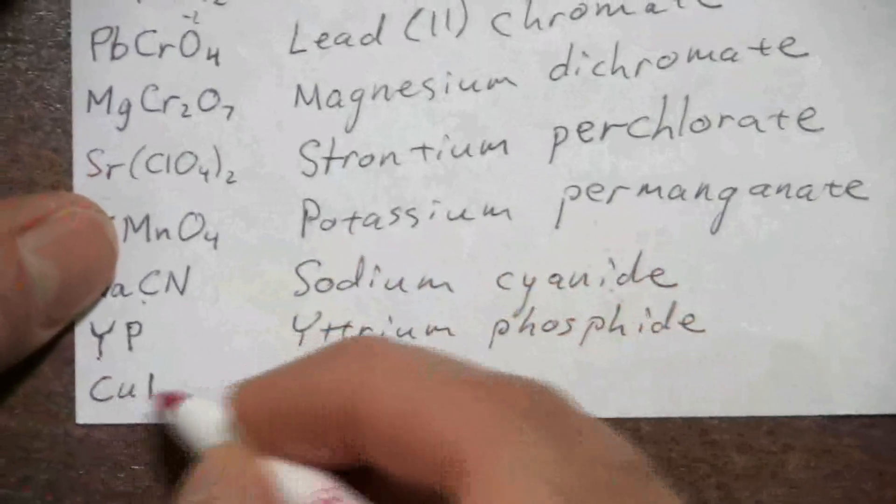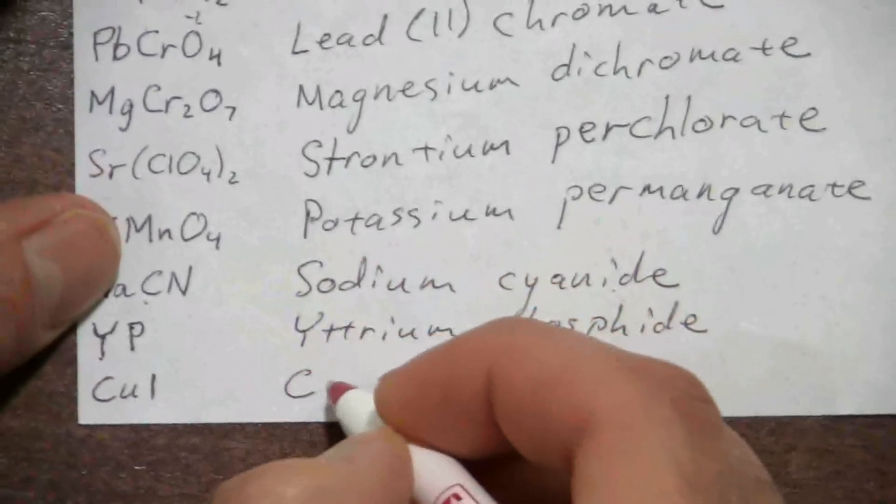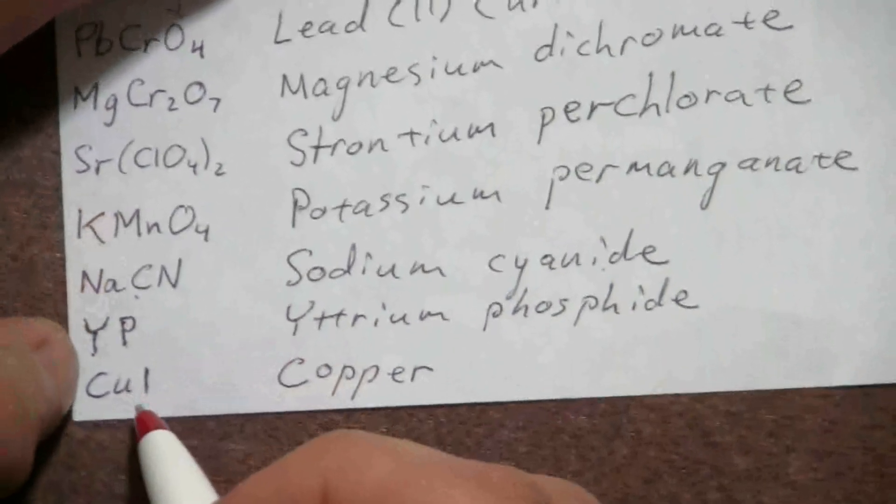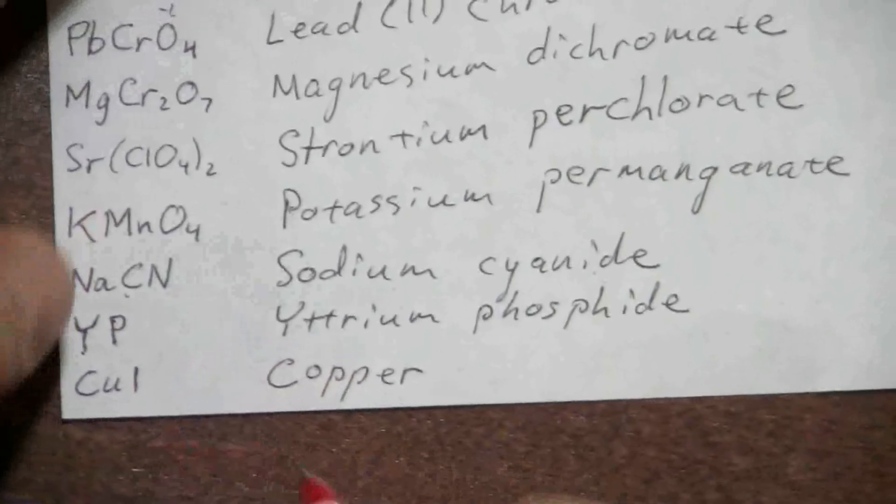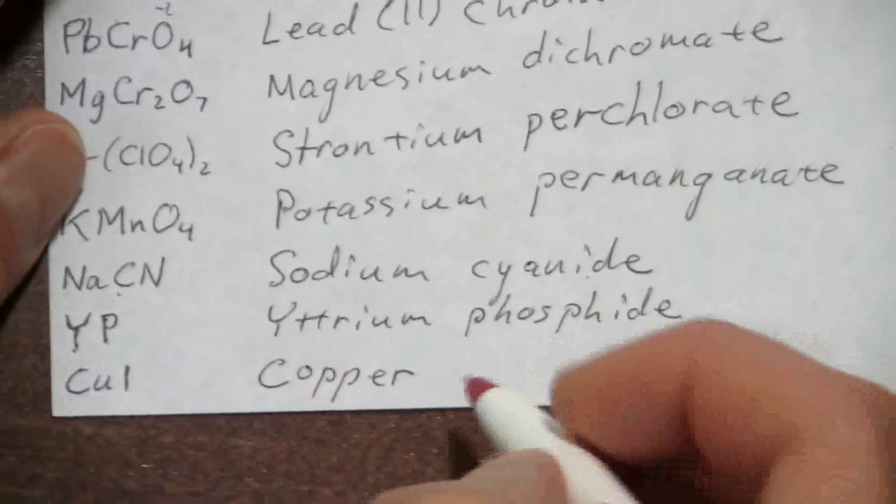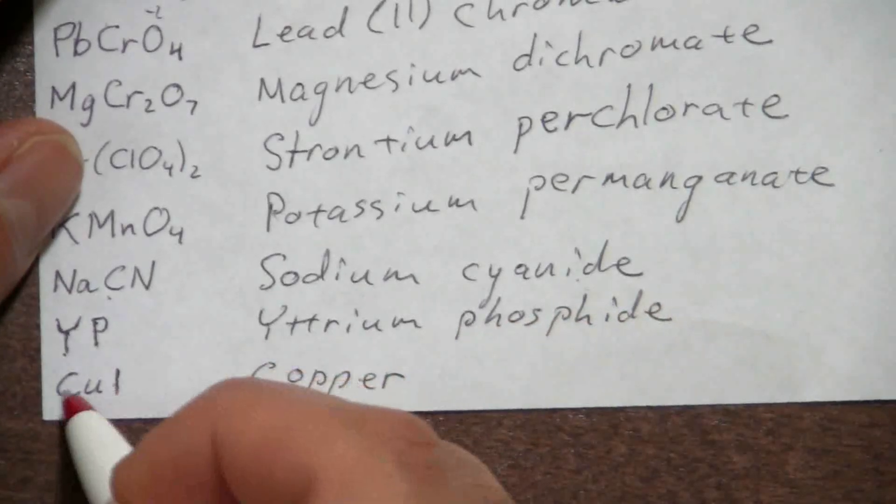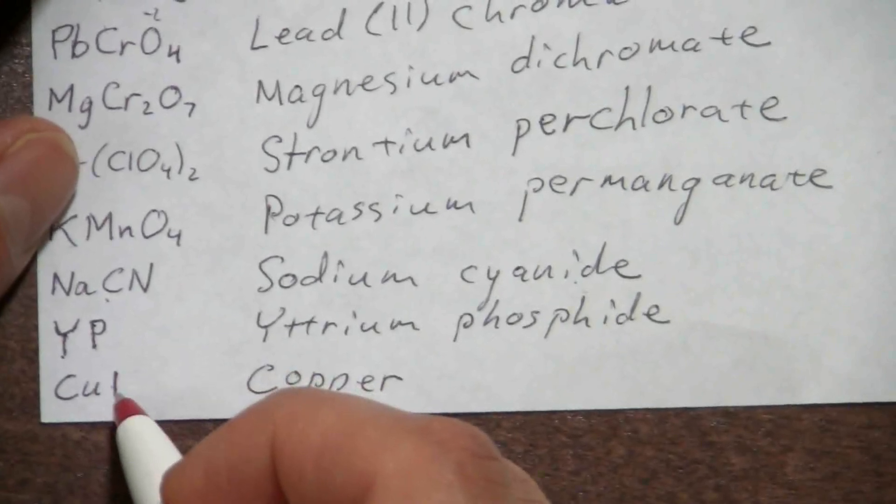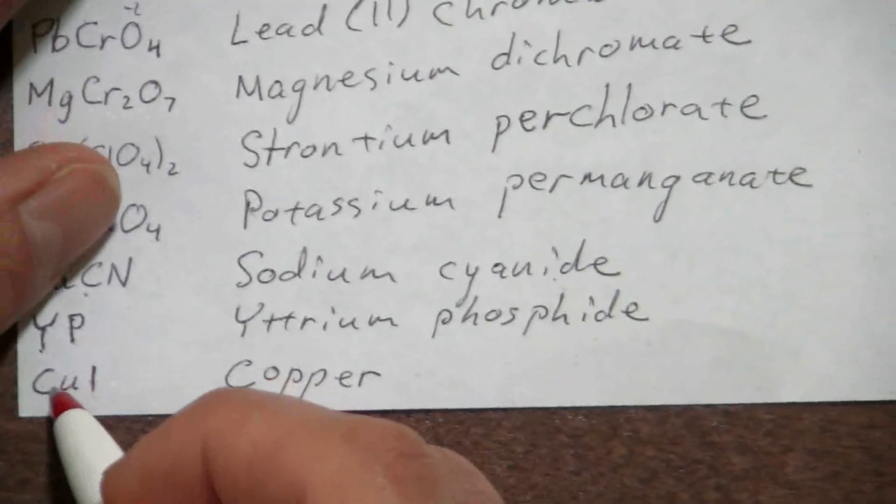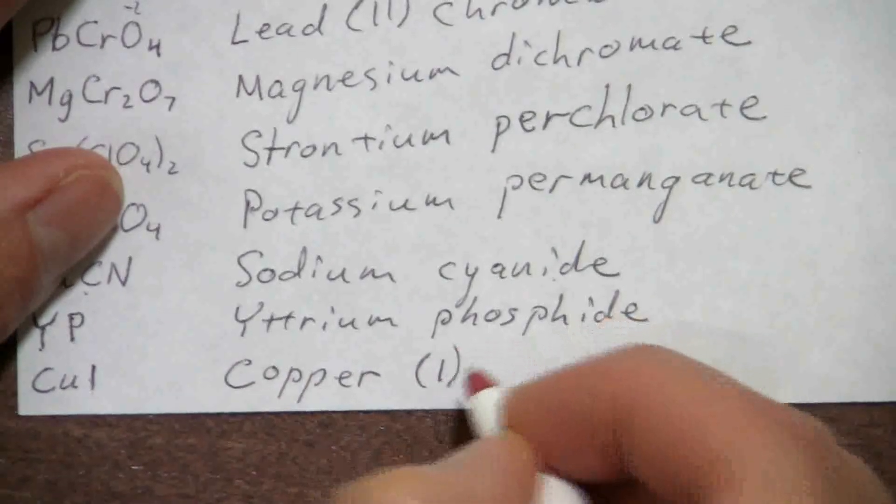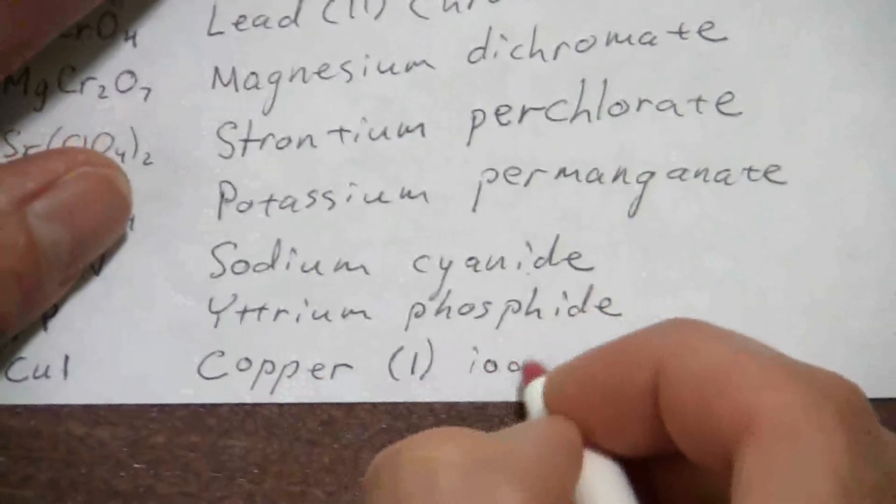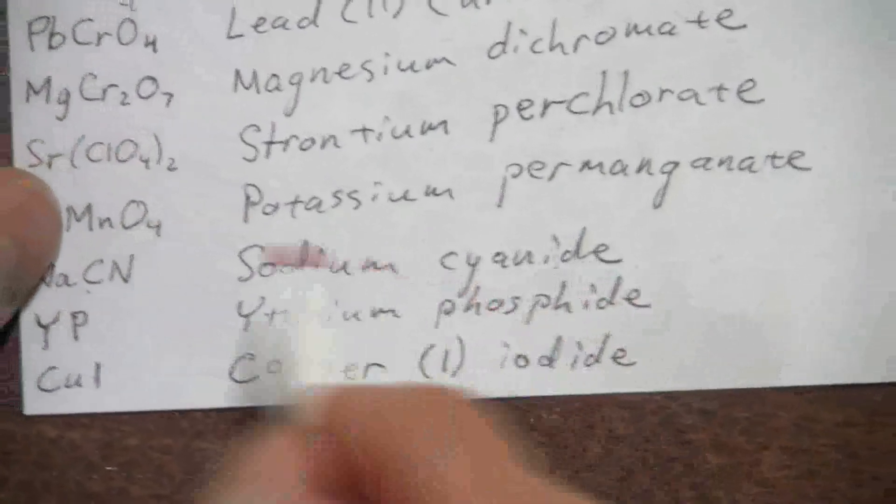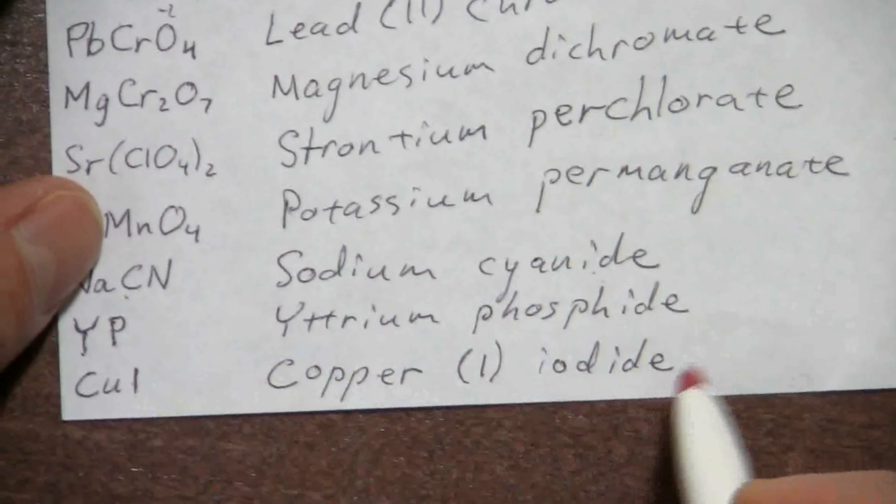All right, and finally here CuI, we have that Cu is copper. Copper is a transition metal, and it is not one of the exceptions that has a fixed charge, so we need to write that in. And we know its charge from the iodine, which is a negative one. It's in the halogens group, so it's a negative one, which makes the copper a plus one. Okay, so that would be copper one iodide. Just like the phosphide monatomic anion, so it ends in IDE.